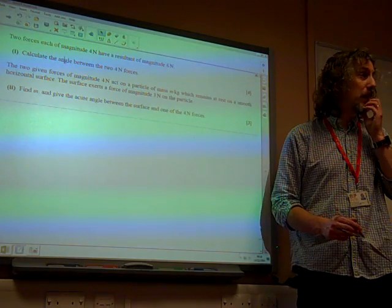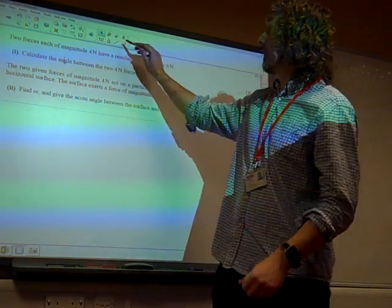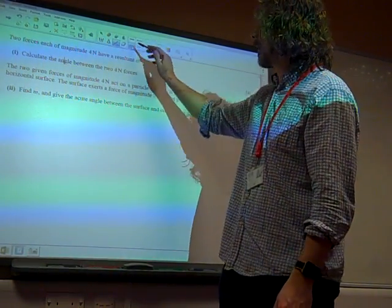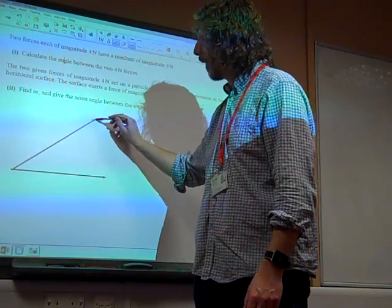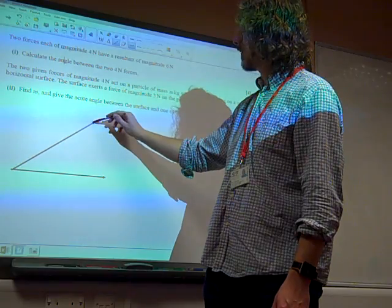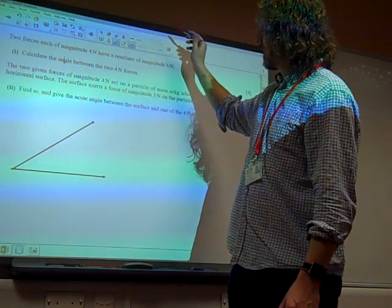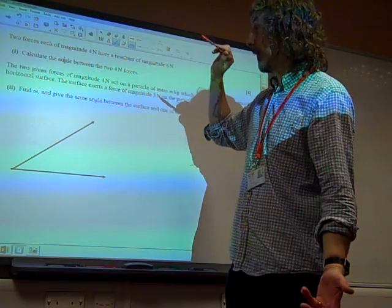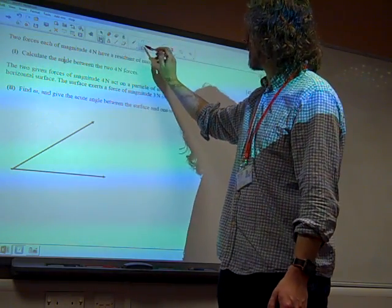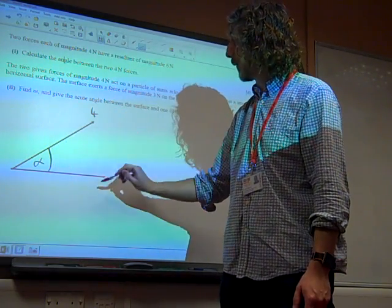Right, so it's worth maybe looking at a couple of different ways of doing this. My instinct for doing this, which is perhaps not the best way, was to say here we have the two forces with a resultant of magnitude 6 Newtons, then I'm going to draw them like that. And I'm going to draw them as having an angle, let's call it alpha, between them.